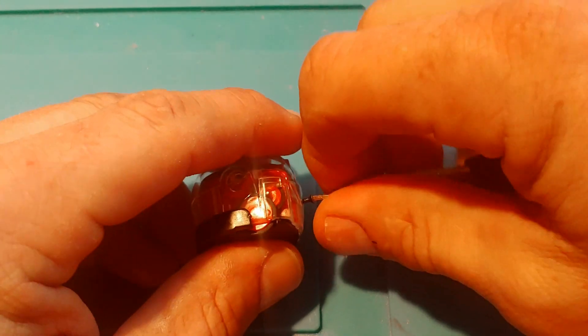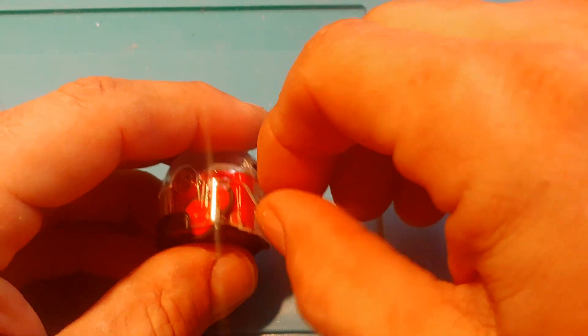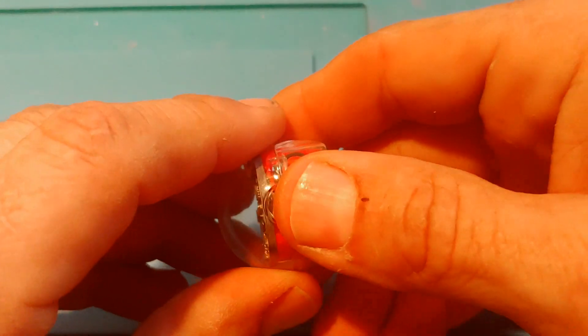You're going to start off with getting off three small screws, one on the back and then two on the bottom.